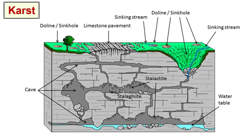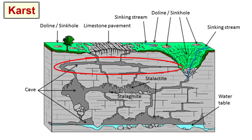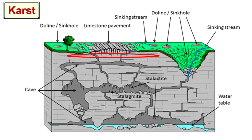Areas of the world that have limestone layers near the surface and lots of ground and surface water will display an array of landforms associated with the chemical dissolution of the limestone by the water, including caverns, sinkholes where the top of a cavern has collapsed, and tunnels. Often these structures are buried under thick layers of soil and we can't even see them. Where we do see the limestone from below just peeking up on the surface with no topsoil, we call that the limestone pavement.